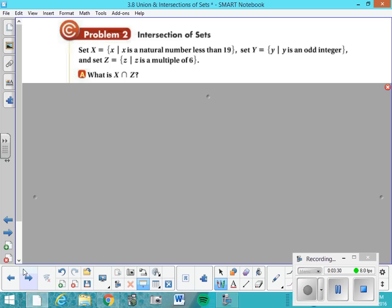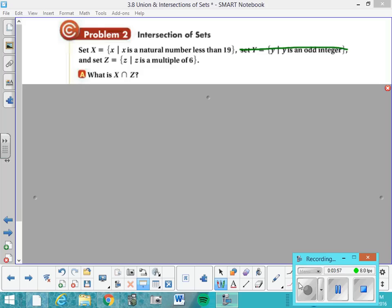Let's do some practice. Here we have set X is the set of all numbers x such that x is a natural number less than 19. Remember, natural numbers is like your counting numbers starting with 1, 2, 3. Set Y is equal to all numbers y such that y is an odd integer. And set Z is the set of all numbers z such that z is a multiple of 6. And they want to know what's the intersection of X and Z. So for right now, just to avoid confusion, I can cross out Y because I'm not considering that. Set X, I'm going to start to write like a little bit in rostered form. Natural numbers start with like the counting numbers 1. So 1, 2, 3, 4, dot dot dot, less than 19. So I know it's only going to go up to 18.